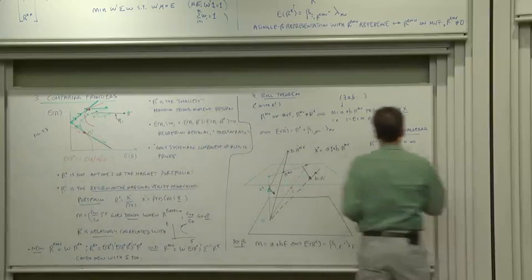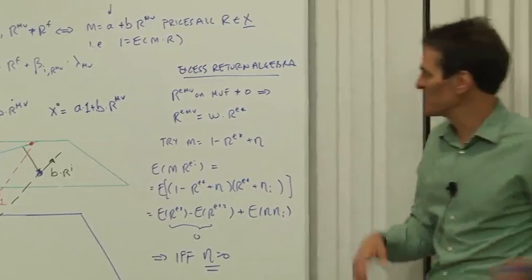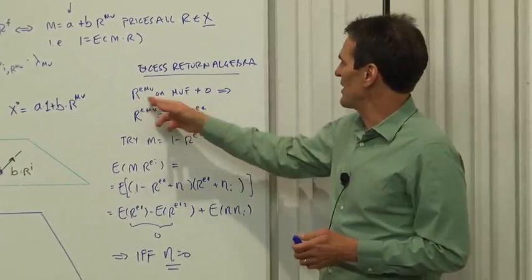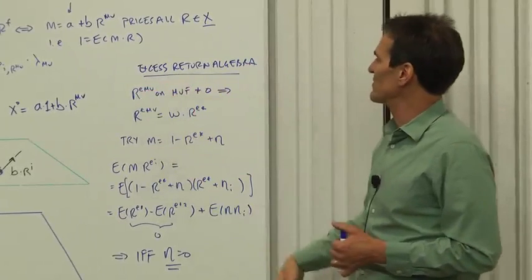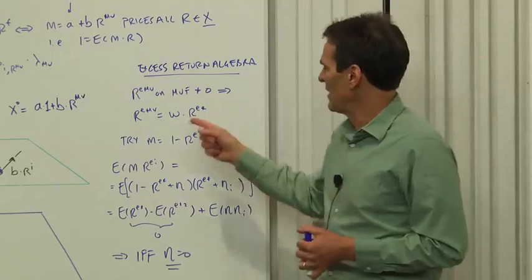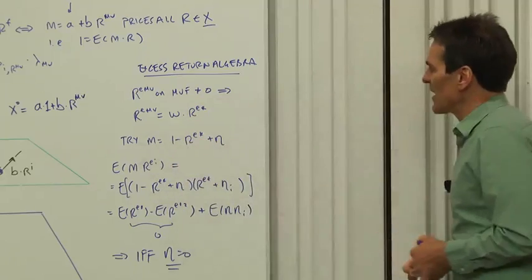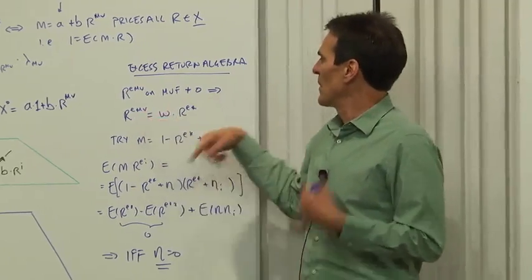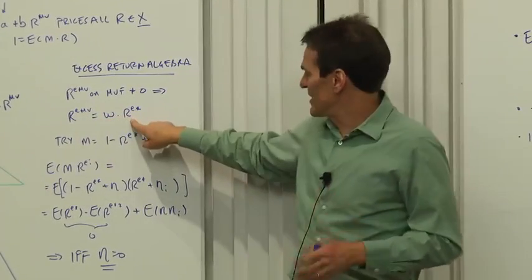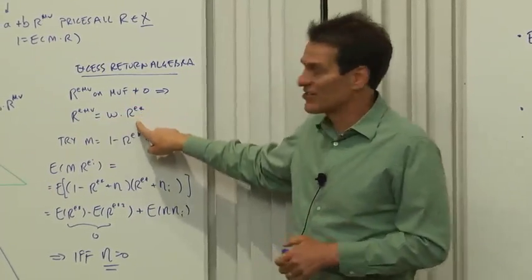Algebraically, here's the case with excess returns. Excess returns are always so simple you can do it in three lines of algebra. So I want to show that if a return is on the mean variance frontier and it's not zero, then I want to construct a discount factor and show that it works. So my representation means if it's on the mean variance frontier, it's just a certain amount of the RE star portfolio.